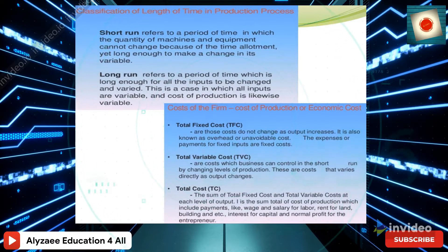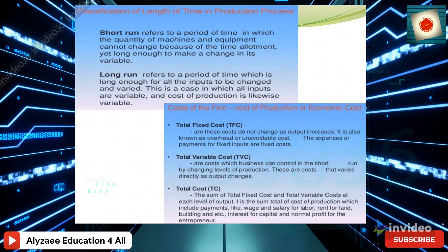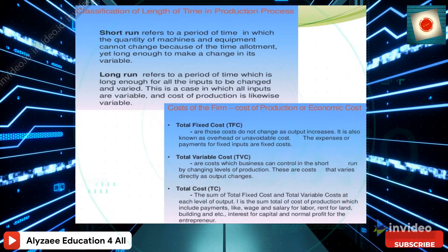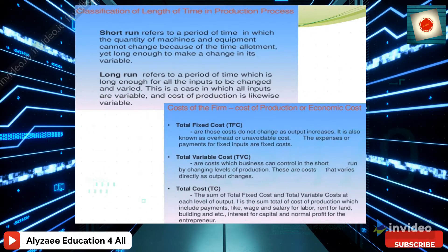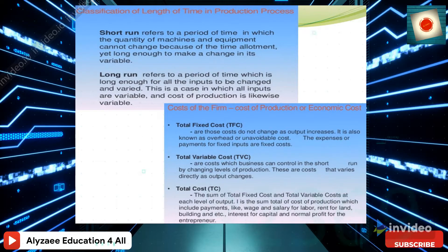Total fixed costs are those costs that do not change as output increases — also known as overhead or unavoidable cost, such as administrative costs. These are payments for fixed inputs. Total variable cost refers to costs that businesses can control in the short run by changing levels of production; they vary directly as output changes. Total cost is the sum of total fixed cost and total variable cost at each level of output.